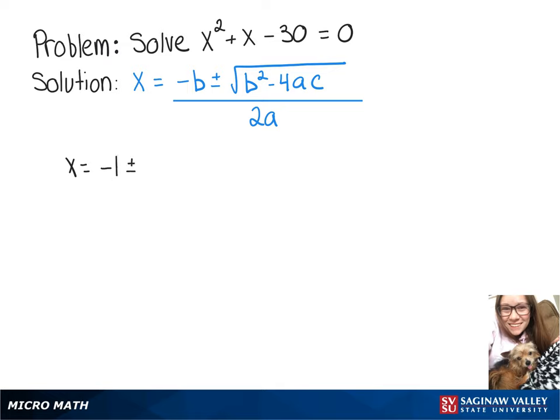So putting those values into our formula we'll get negative 1 plus or minus 1 squared minus 4 times 1 times negative 30 over 2 times 1.